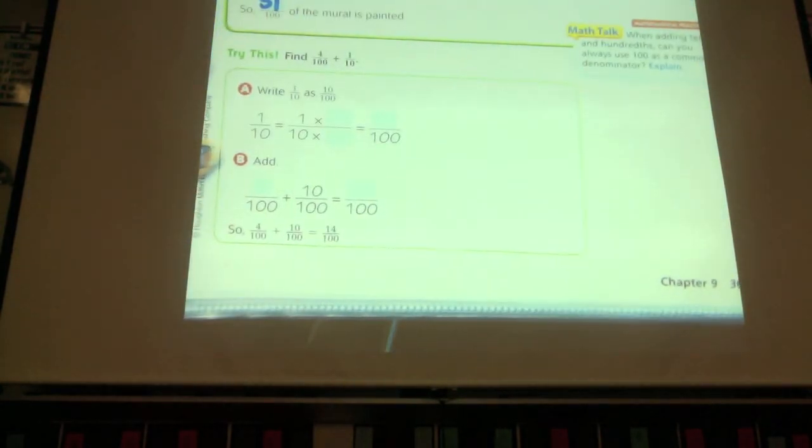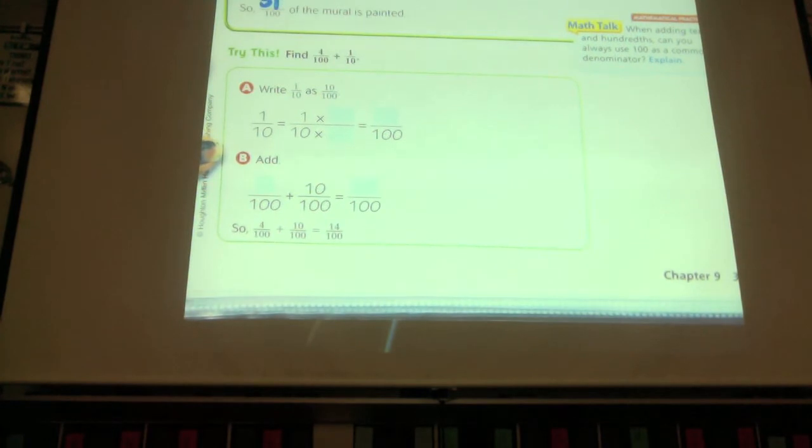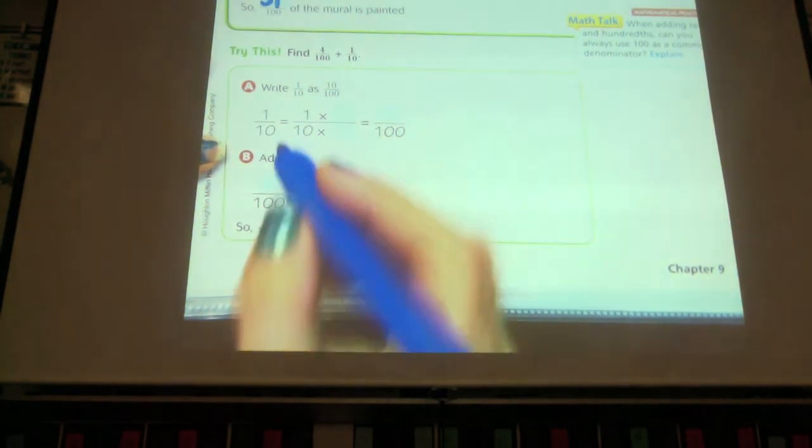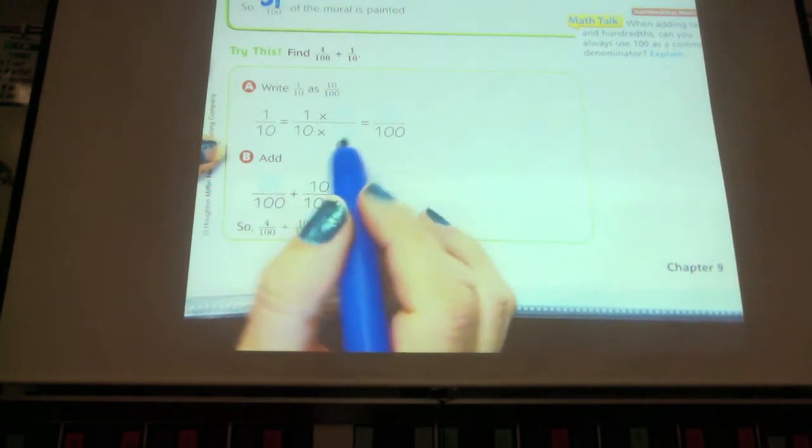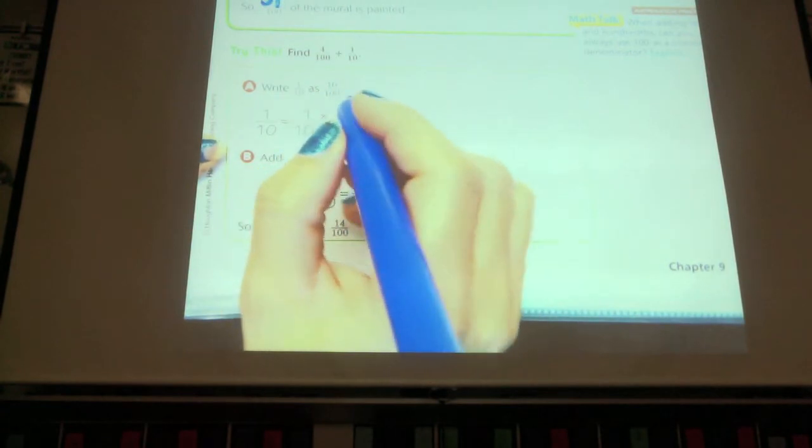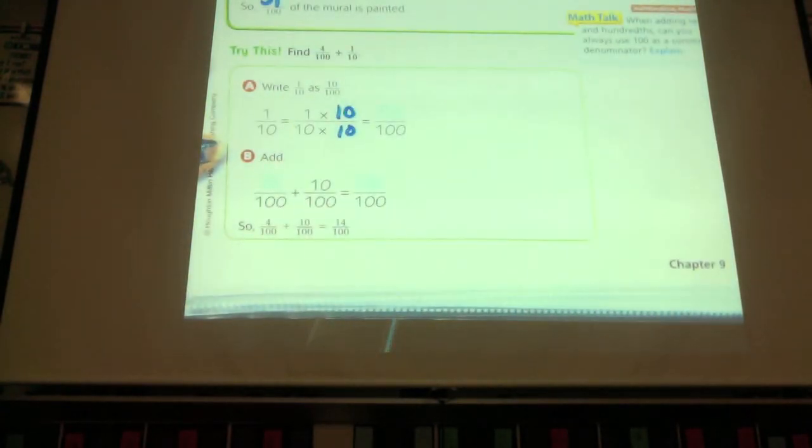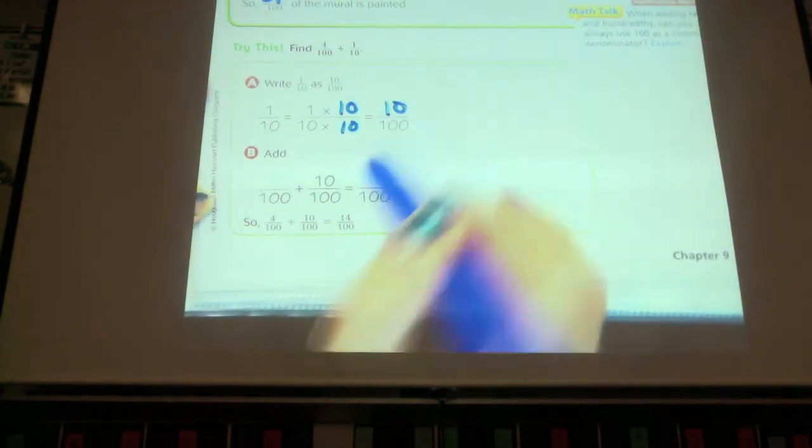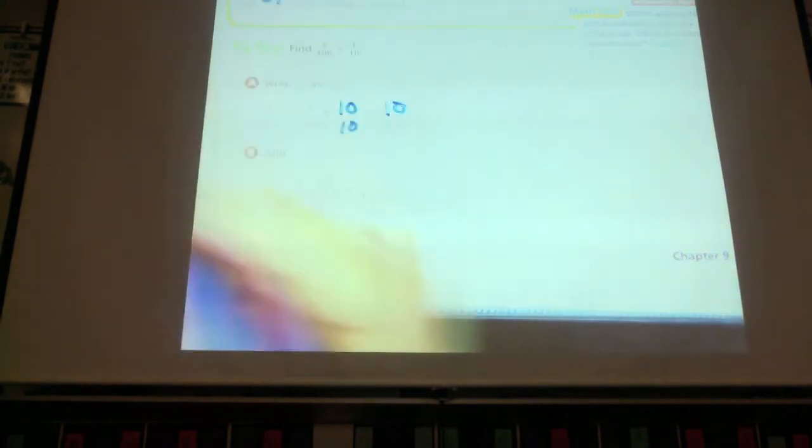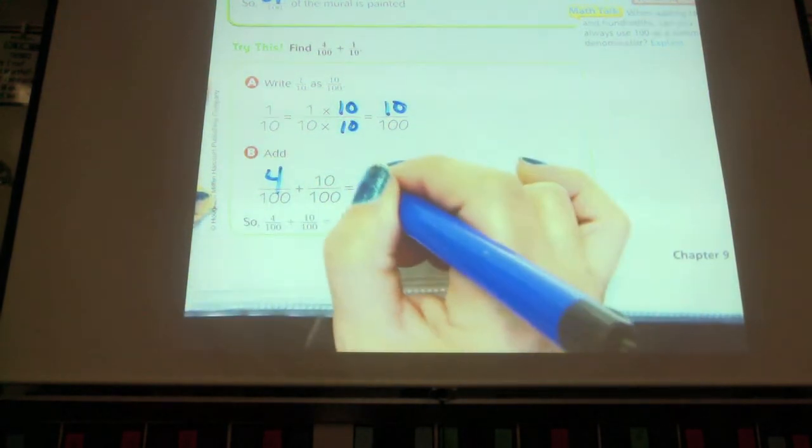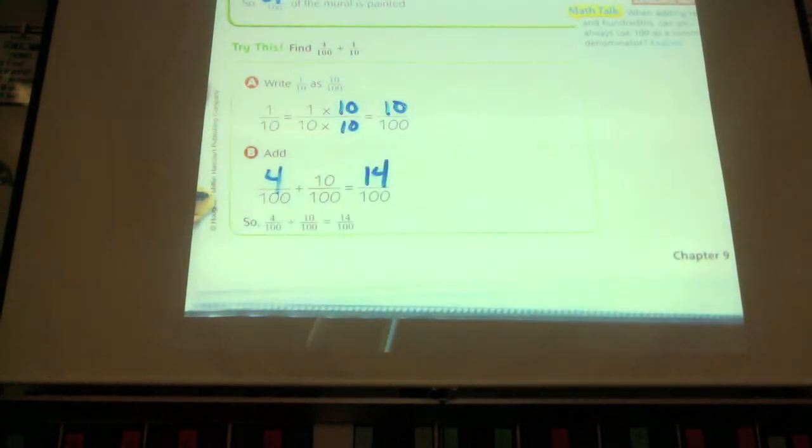Find four hundredths plus one tenth. Again, do they have the same denominator? No. Which fraction do I need to change? One tenth. One tenth. I can multiply ten times what to get a hundred? Ten. So, if I multiply the denominator, I multiply the numerator. So, one times ten is ten hundredths. They've already put it down here for us. We also are adding the four hundredths. Four hundredths plus ten hundredths is fourteen hundredths.